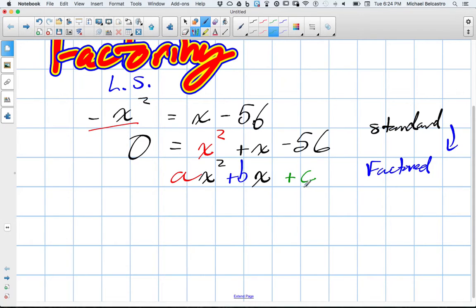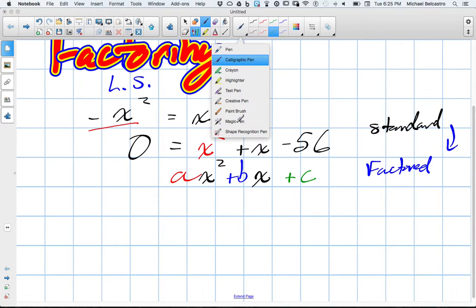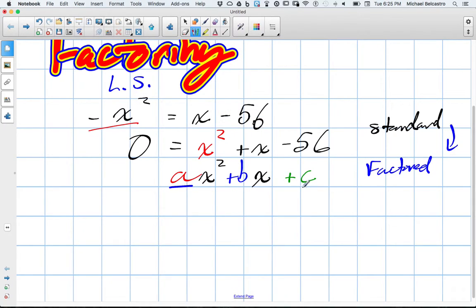When we go to actually go to the factor form, if we're doing product and sum, what we're looking for is a times c. So two values that multiply to whatever a times c is, and then those same two values need to add up to what our b value is. We want two values that multiply to a times c, and those same two values need to add to our b term.